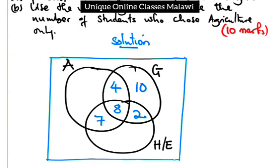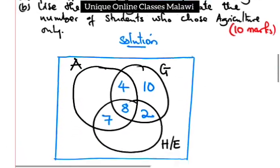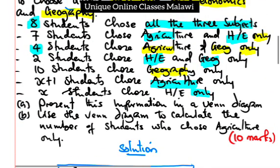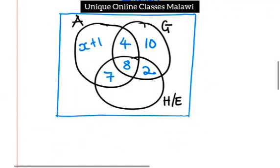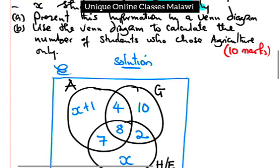X plus 1 students choose Agriculture only, so we are putting x plus 1 here. X students choose Home Economics only. And the total number of students in class is 40.